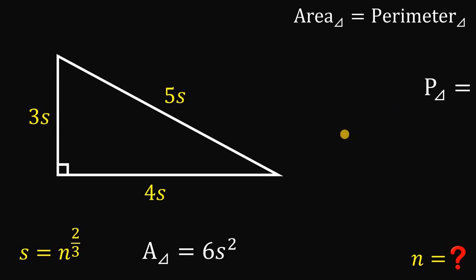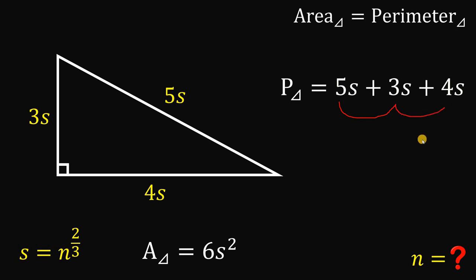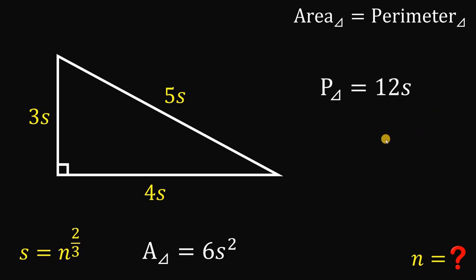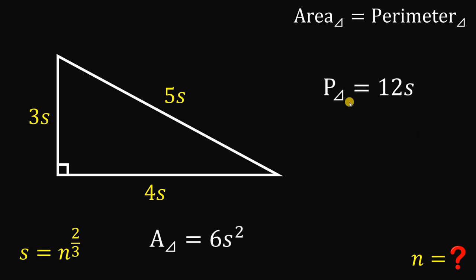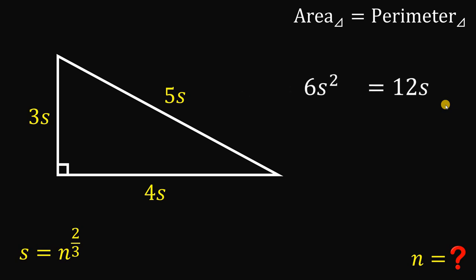Now, how about the perimeter? The perimeter is the sum of all sides, so it equals 5s plus 3s plus 4s. Since 5 plus 3 plus 4 equals 12, the perimeter is 12s. Since the area and perimeter must be equal, we can equate 6s squared to 12s.